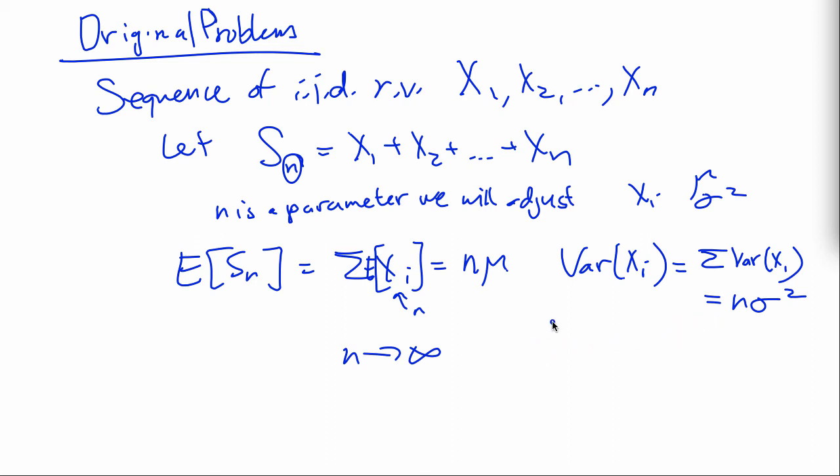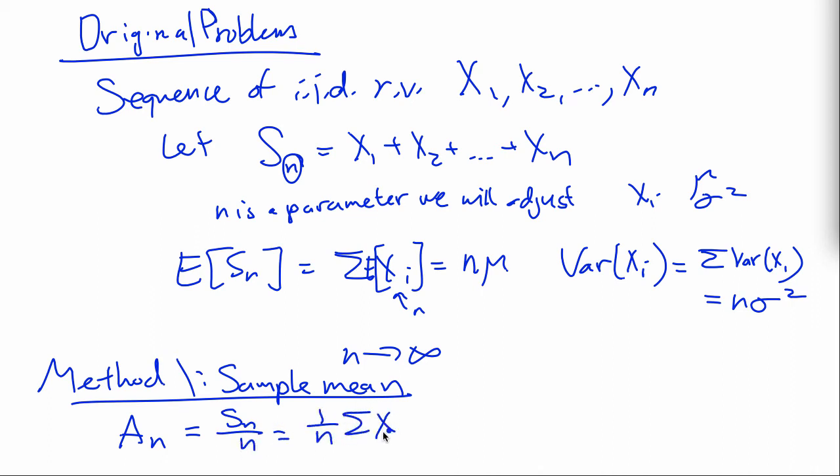So, the first way is to use the sample mean. So, basically, all that entails is, we divide this sum. We get a new random variable by dividing this sum by n. So, this is 1 over n times the sum of the xi.